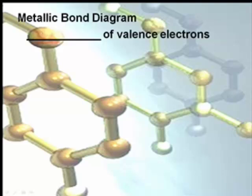And lastly, we can have a metallic bond. A metallic bond is where we have a sea of valence electrons - not the letter C, S-E-A, like the ocean.